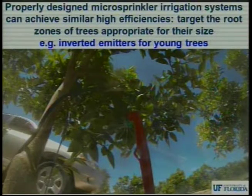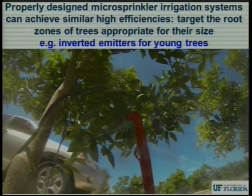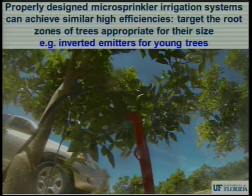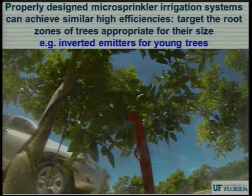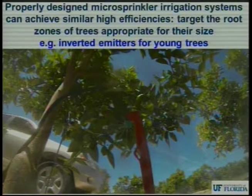The same type of system can be implemented with microsprinklers if you don't want to use drip. When properly designed and implemented, it can achieve the same high efficiencies. The important thing is to target the active root system appropriate for the size of the tree. One shouldn't install microsprinklers in the upright position on newly planted trees, because about 80 to 90 percent of the water will never reach the root system — especially if there are nutrients in that stream. One trick is to invert the emitter.